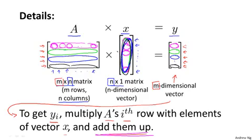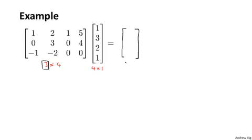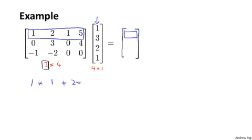Let's do one more example. This is a 3 by 4 dimensional matrix multiplied by a 4-dimensional vector, or 4 by 1 matrix. So the result is going to be a 3-dimensional vector — I'll write a vector with room for 3 elements. For the first element, I take these four numbers and multiply them with the vector x: 1 times 1 plus 2 times 3 plus 1 times 2 plus 5 times 1, which is 1 plus 6 plus 2 plus 6, giving me 14.